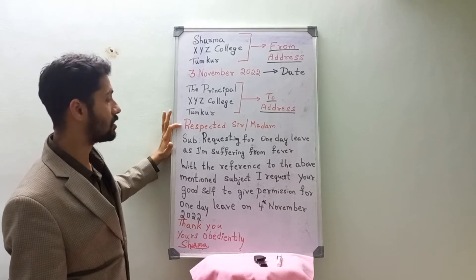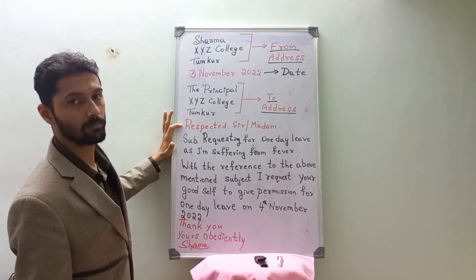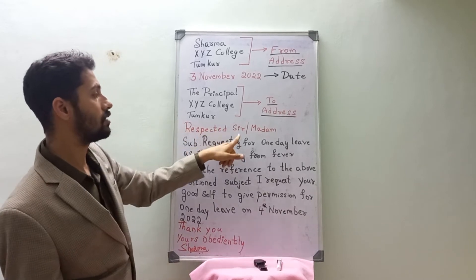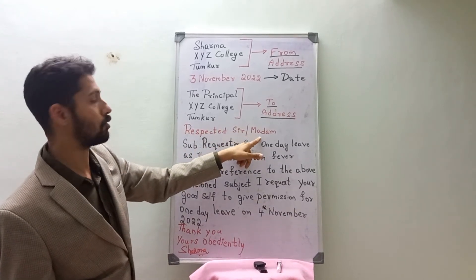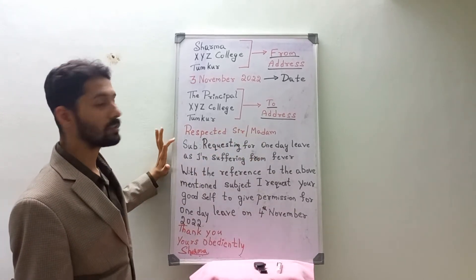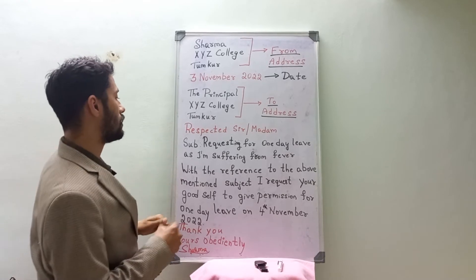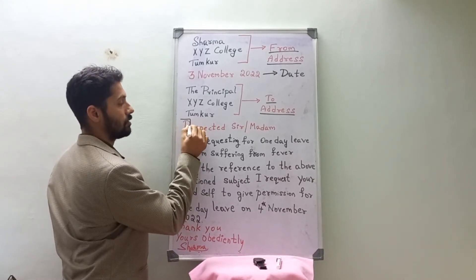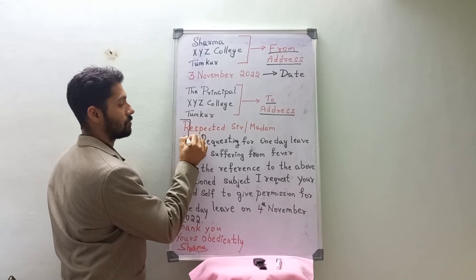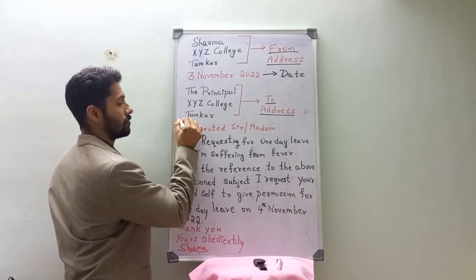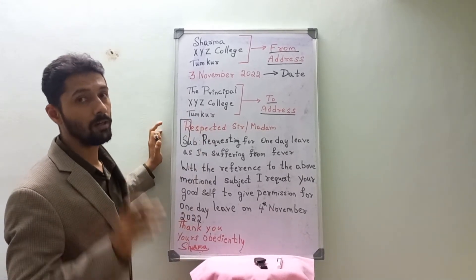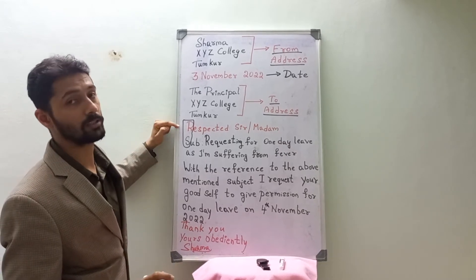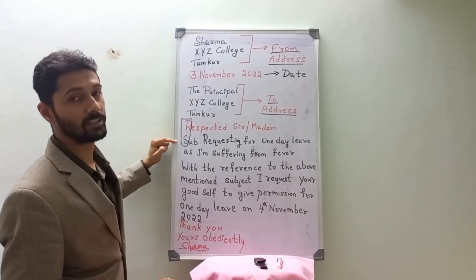Next is the salutation, that is 'Respected Sir.' Whether it is a principal — you can write 'Sir,' or otherwise 'Sir or Madam.' Now the subject comes. Always keep in mind the short form, that is the RS method. First it is 'Respected,' after that the subject — this is called the RS method. Always write 'Respected Sir' first, and after that only write the subject.